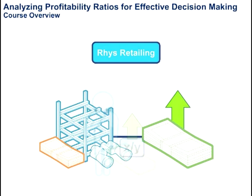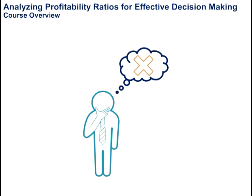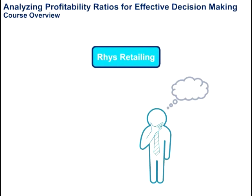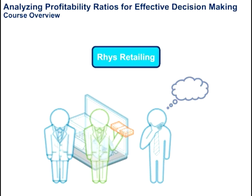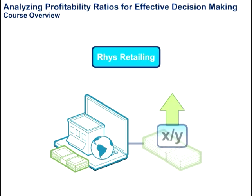Failure to consider the effects on profitability ratios could lead to incorrect decisions. You will examine the decisions facing Rees Retailing's managers and how the company's owners and creditors may view those decisions by examining how an investment in Internet Retailing affects profitability ratios.